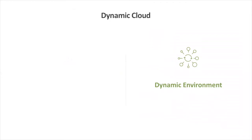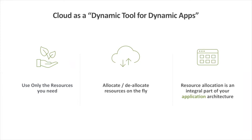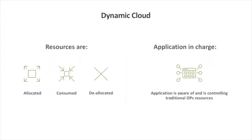Now let's switch to talking about using the cloud as a dynamic environment. What I mean by using the cloud as a dynamic tool is: use only the resources you need, allocate and deallocate the resources you need on the fly, and resource allocation itself becomes an integral part of your application architecture. In a dynamic application, resources are allocated, consumed, and deallocated on the fly, and the application is aware of and controlling this management of resources. The application is essentially performing traditional ops resource management tasks.